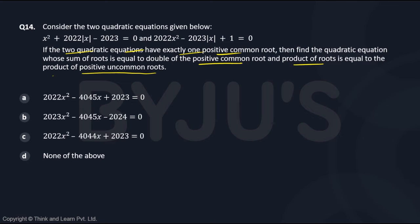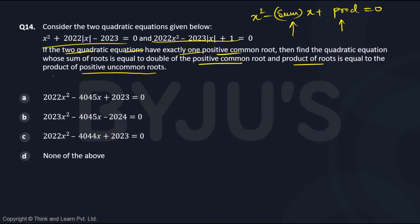The general form of a quadratic equation is x squared minus (sum of roots) times x plus (product of roots) equals 0. I want to find the sum of the roots — I have a condition for that — and also the product of the roots, which also has a condition. So let me first solve these two quadratic equations.